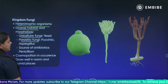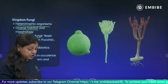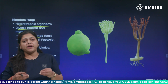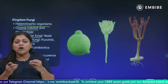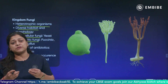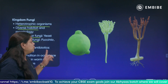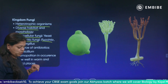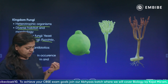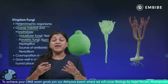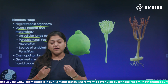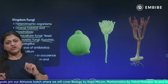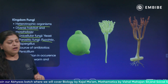Parasitic fungi are responsible for causing different kinds of diseases in plants and animals. One example is Puccinia — it causes rust disease in wheat (gehu). The particular fungi is called Puccinia graminis.